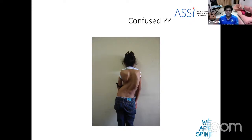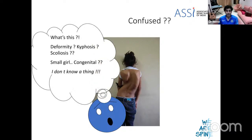However, when you see something like this, often you get confused because you've not been exposed to a lot of this during your post-graduation and you start wondering: is this kyphosis, is this scoliosis, I can see that bend on the back — what am I going to say? Is this congenital, is this idiopathic, is this neuromuscular?